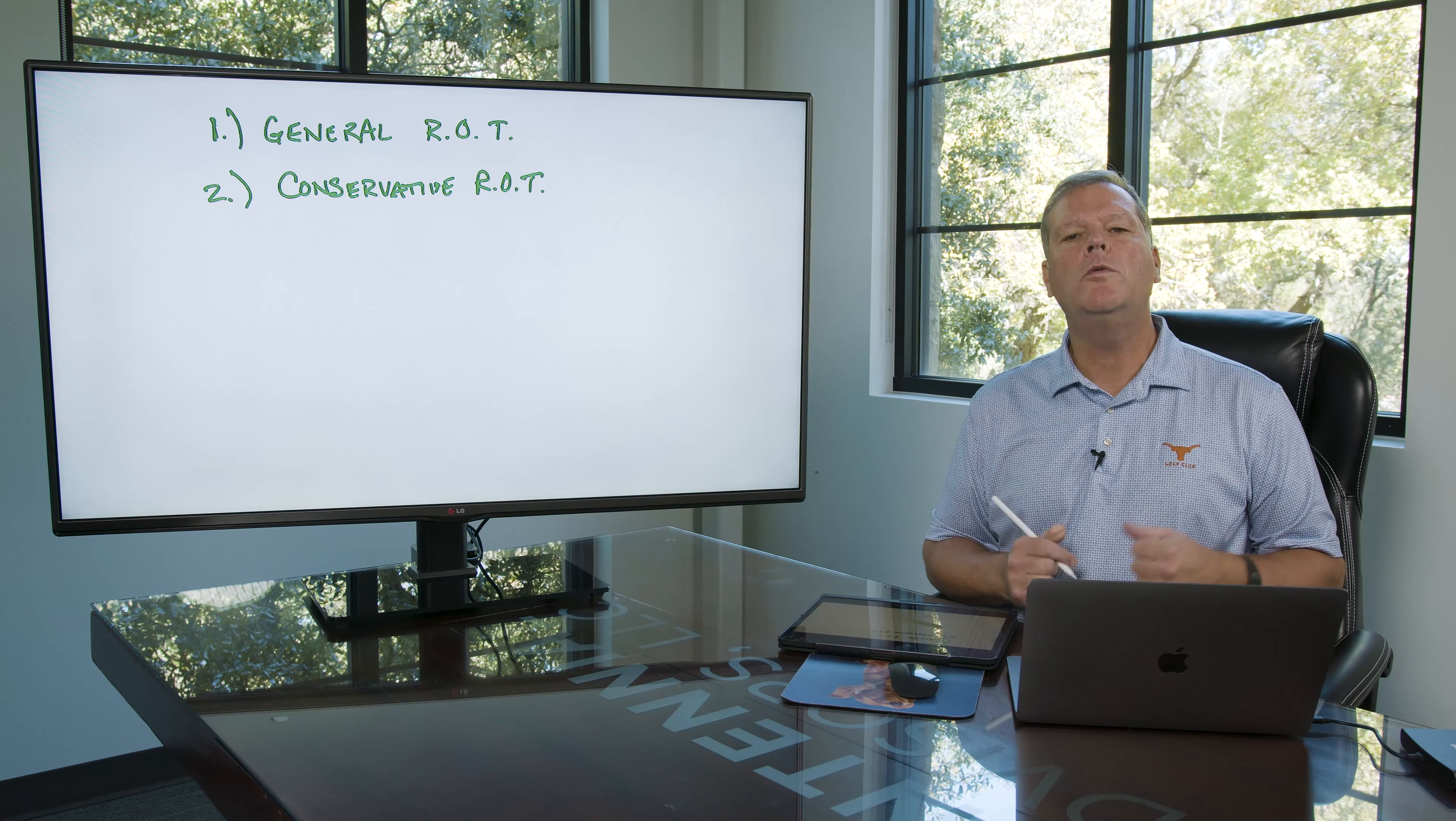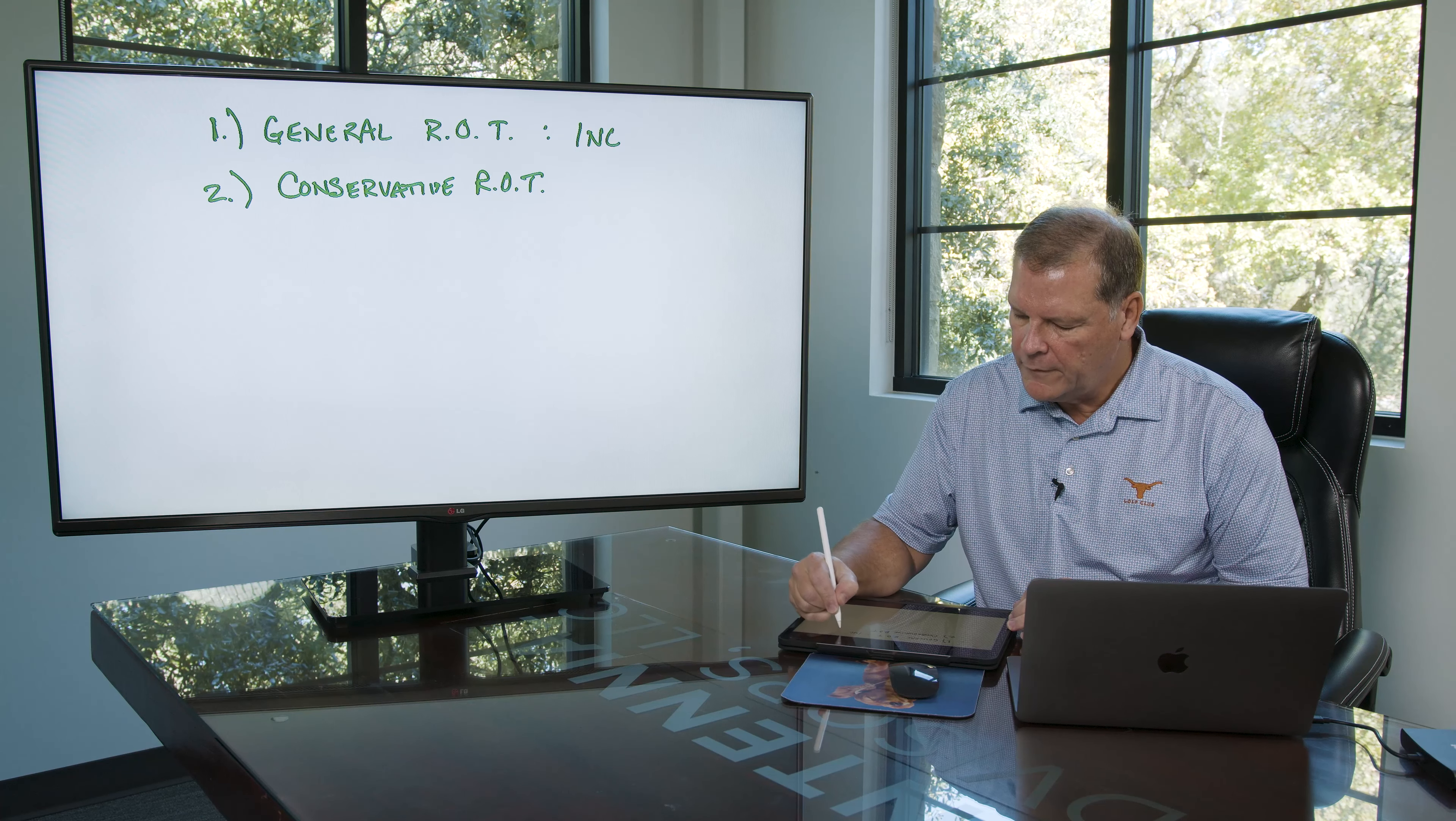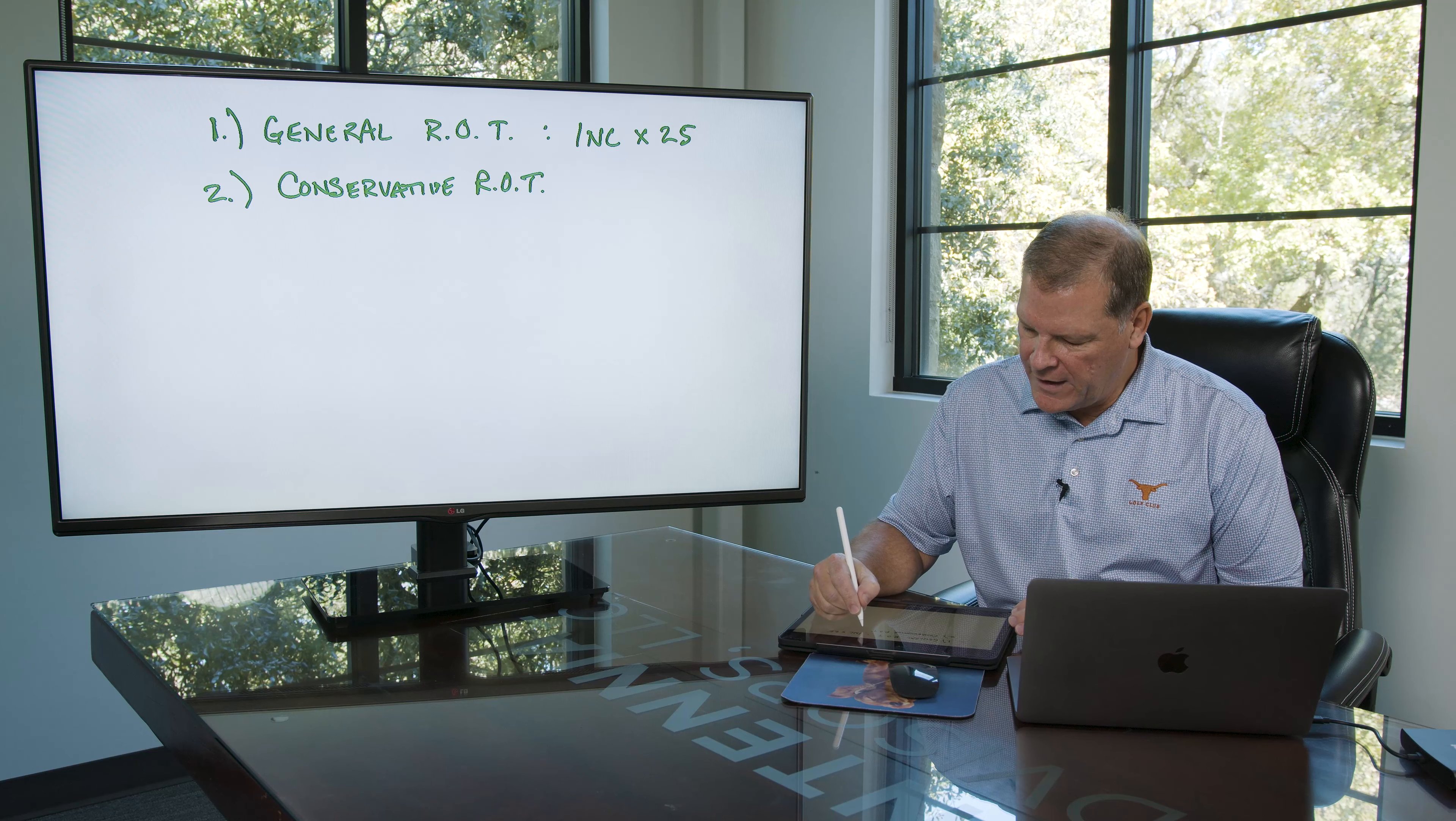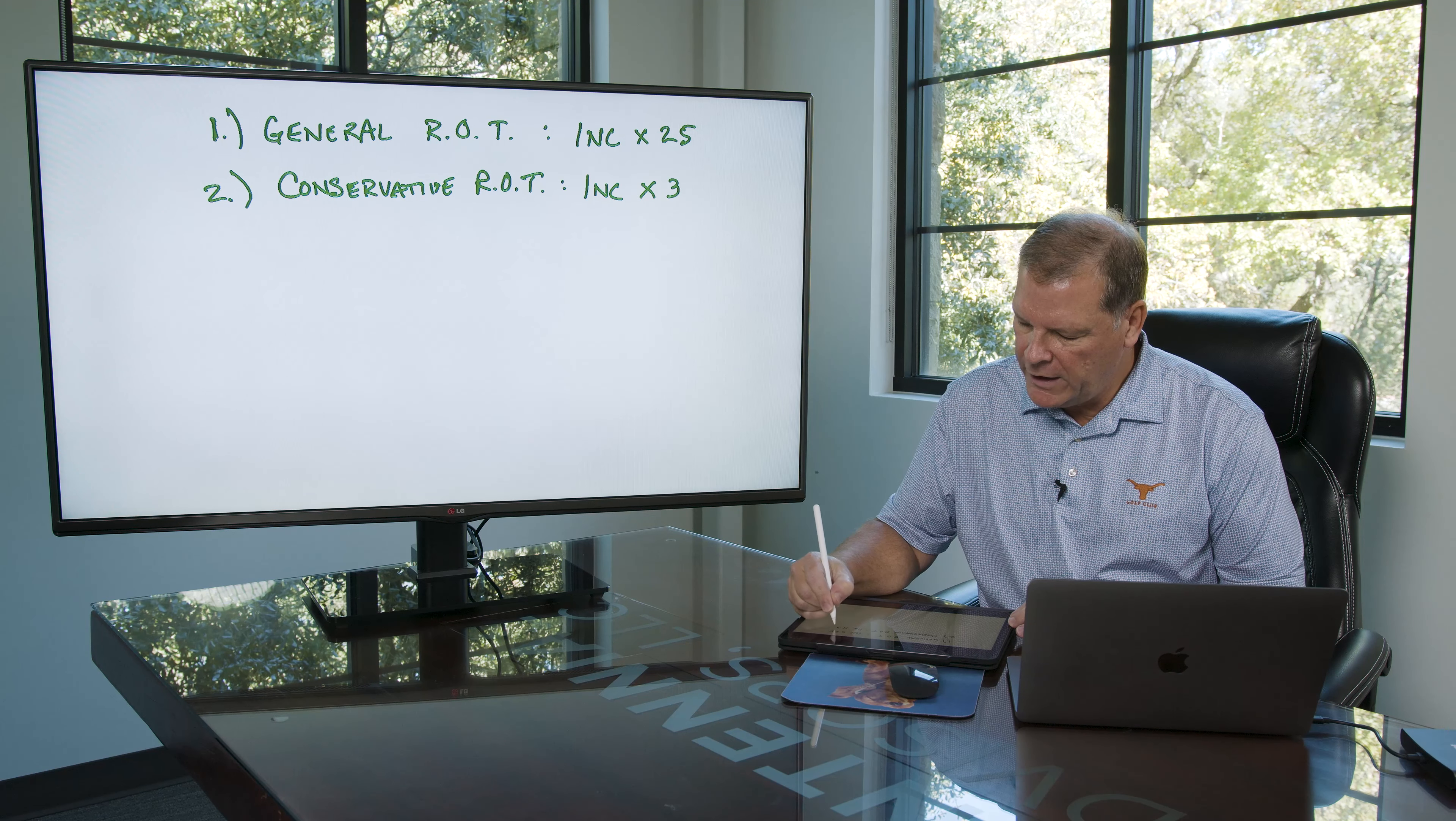So the general rule of thumb is income goal times 25. The conservative rule of thumb is income goal times 33.